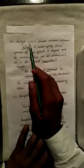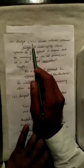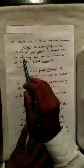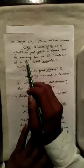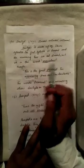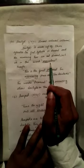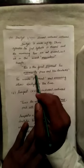Next, the fourth type is Dactyl. Dactyl mein teen syllables hote hain: pehla jo hai wo stressed hai, aur remaining two syllables jo hain wo unstressed hain. Dactyl is made up of three syllables — the first syllable is stressed and the remaining two are not stressed. Such as in the word 'marvelous.'